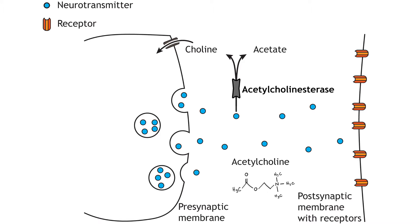Acetylcholine action is terminated by acetylcholinesterase, an enzyme present in the synaptic cleft. Acetylcholinesterase degrades acetylcholine into choline and acetate molecules. Choline is then transported back into the presynaptic terminal and used in the synthesis of new acetylcholine.